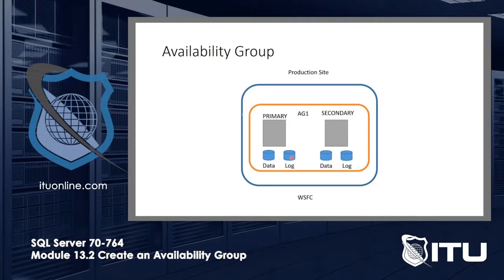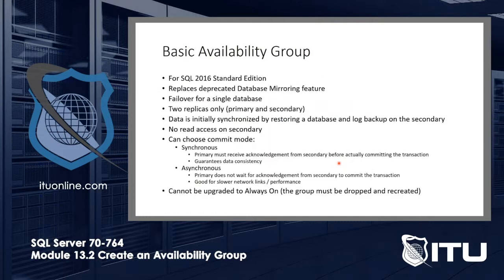These databases will be synchronizing constantly. If the primary goes offline, the secondary can take over — not by taking over shared data, but just taking over its own local data. The basic availability group is for SQL 2016 Standard edition, meant to replace the deprecated database mirroring feature. It's a failover for a single database, not a whole server. You have only two replicas. The word replica — don't think of it as secondary.